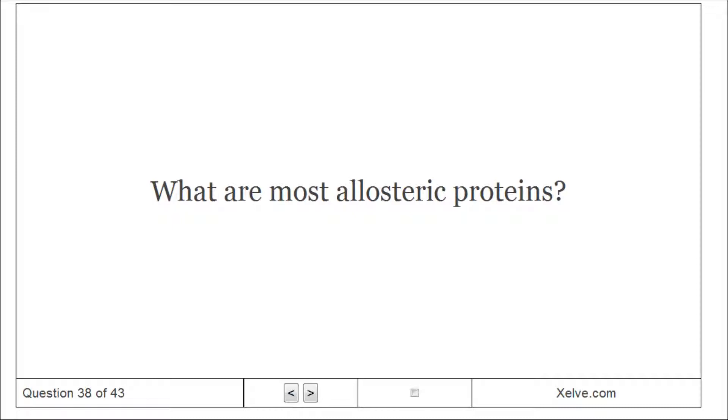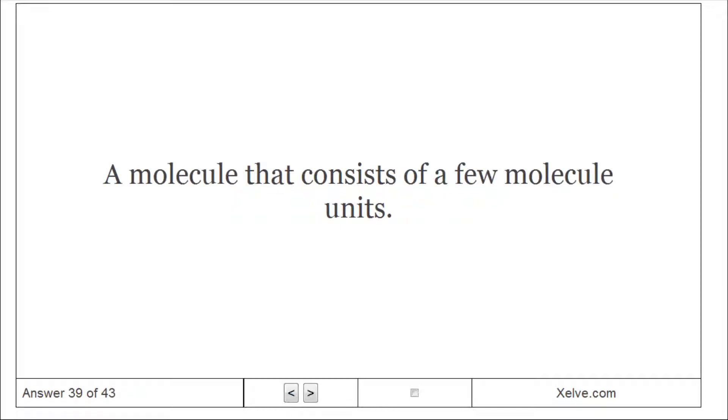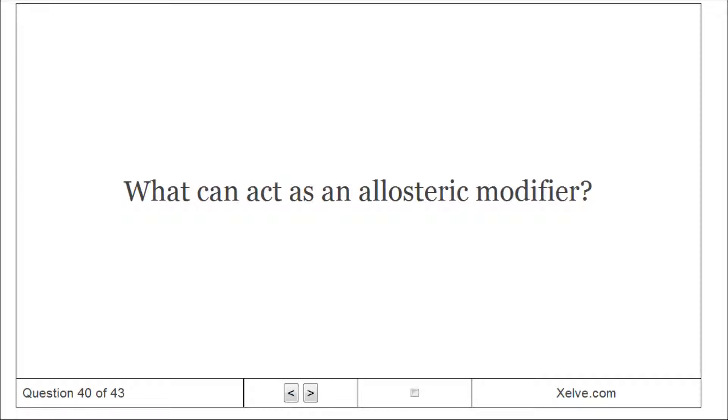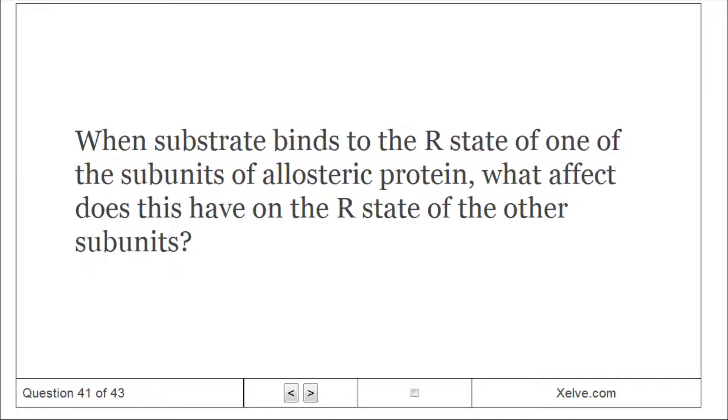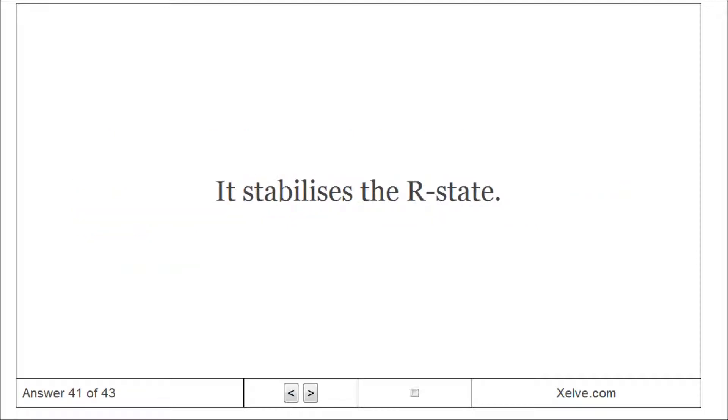What are most allosteric proteins? Oligomers. What is an oligomer? A molecule that consists of a few molecular units. What can act as an allosteric modifier? The substrate of the enzyme. When substrate binds to the R-state of one of the subunits of allosteric protein, what effect does this have on the R-state of the other subunits? It stabilizes the R-state.